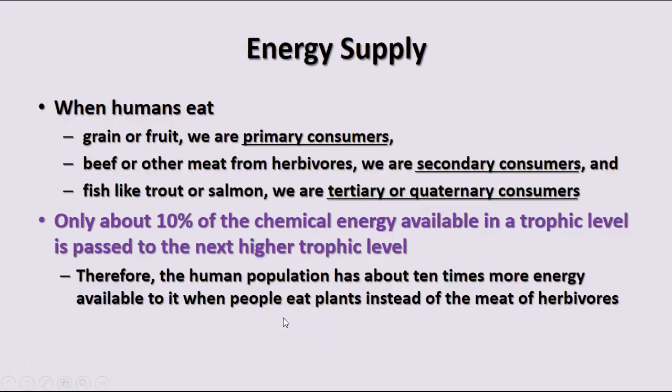When we eat grain or fruit, we're primary consumers. When we eat beef or things from herbivores, we're secondary consumers. When we eat trout, salmon, or other fish, we're tertiary or quaternary consumers. Since we only get about 10% of the chemical energy at each step, we get 10 times more energy available when we eat plants instead of the meat of herbivores. That's essentially what the food pyramid is based on — you should get most of your energy from plant materials and less from higher trophic levels.